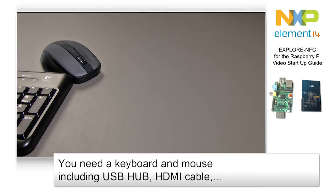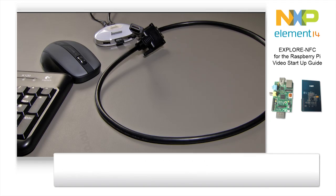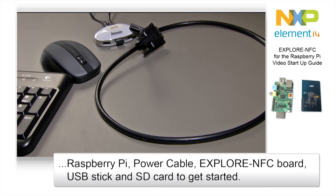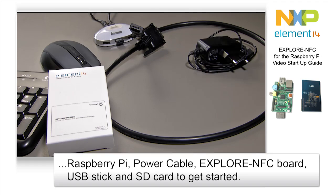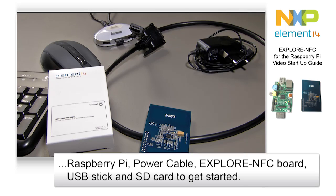To get started you will need the following parts: a keyboard, a mouse and a USB hub, an HDMI cable for connecting the Raspberry Pi with the monitor, a Raspberry Pi, a power cable for the Raspberry Pi, the Explore NFC board, a USB stick, and an SD card for the operating system of the Raspberry Pi.